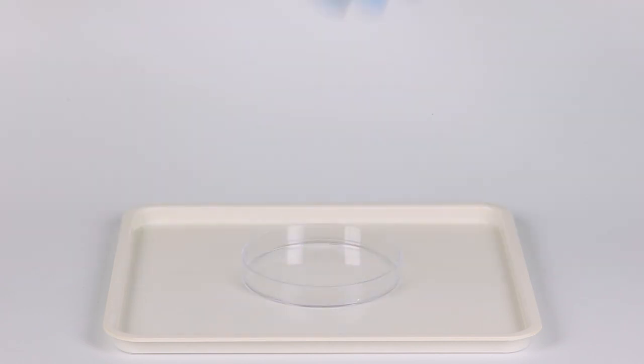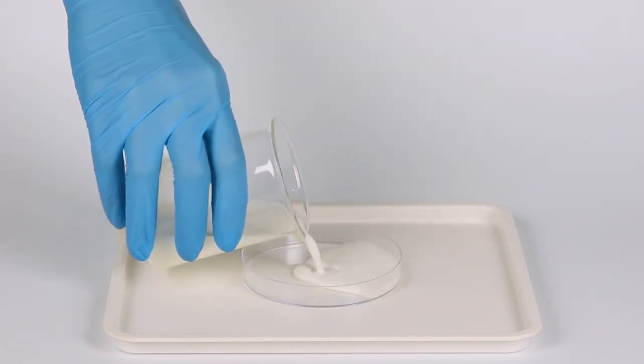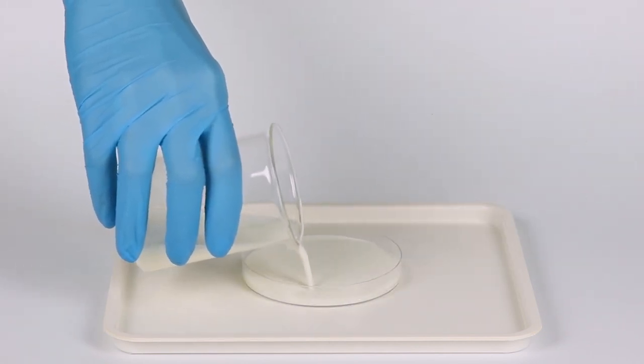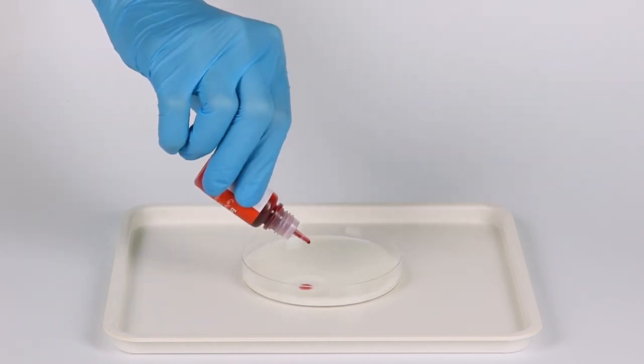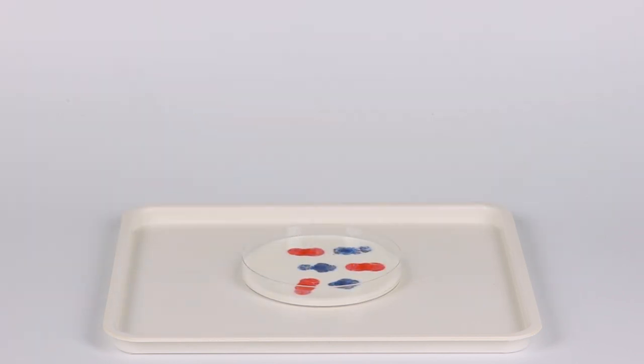Pour the milk into the petri dish until the bottom of the dish is evenly covered. Deposit two or three drops of eosin, methylene blue and annatto solutions into different places in the petri dish.